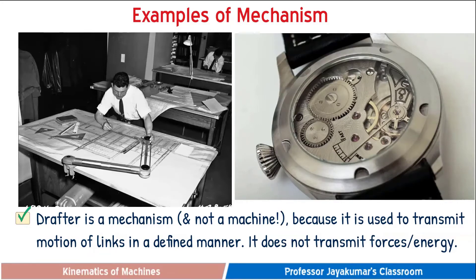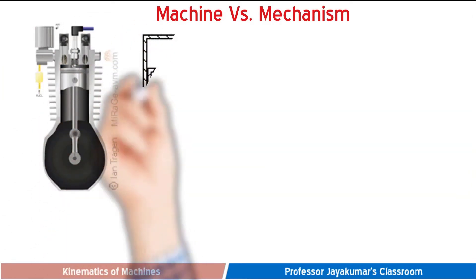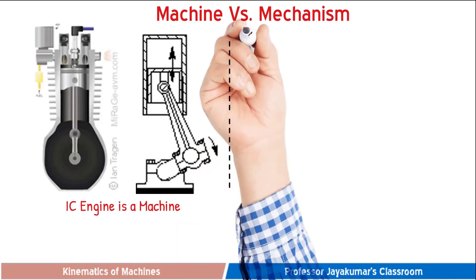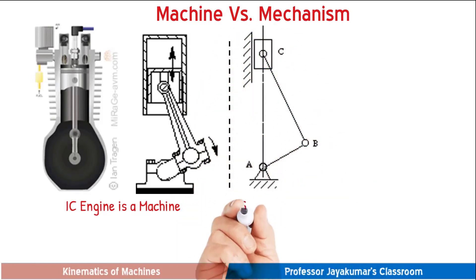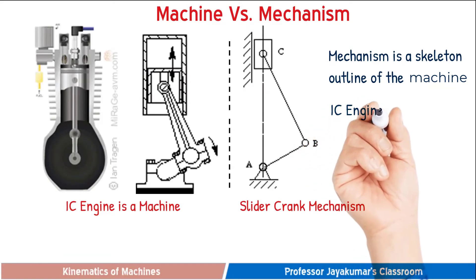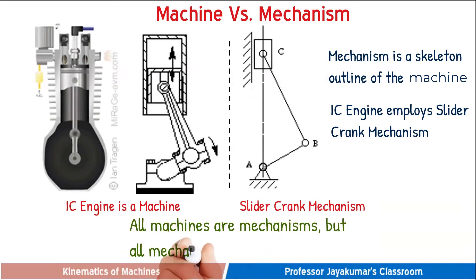Let us consider a classical IC engine to illustrate the difference between machine and mechanism. An internal combustion engine is a machine because it transmits and transforms chemical energy into mechanical energy. To do that, it employs a slider-crank mechanism, which converts the reciprocating motion of the piston into the rotary motion of the crank. A mechanism is a skeleton outline of the machine. So we can say that all machines are mechanisms, whereas all mechanisms are not machines.